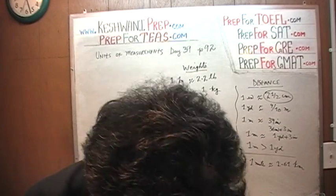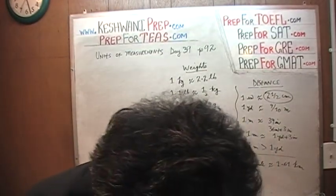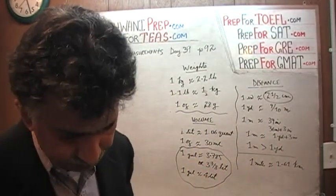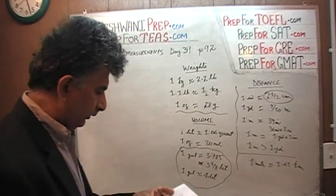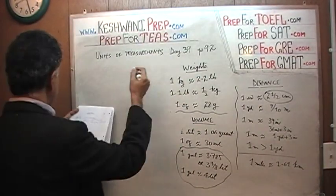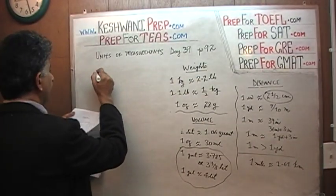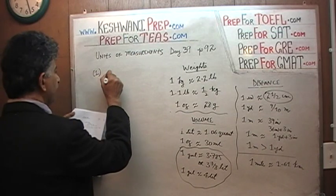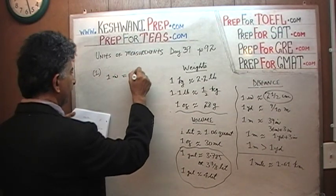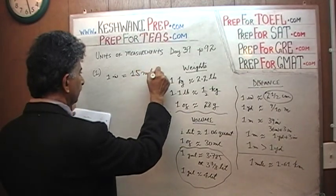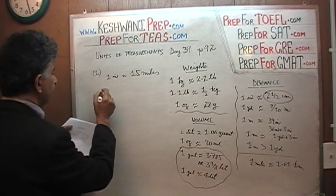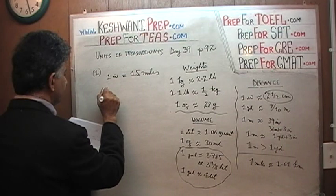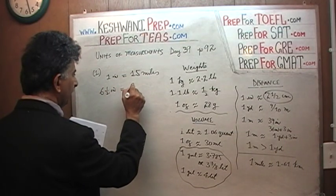Number 1. It says an inch represents 15 miles. Let's make a note. So we are on 92, number 1. 1 inch, we are told, represents 15 miles. The question simply is 6.5 inches would be how many miles?